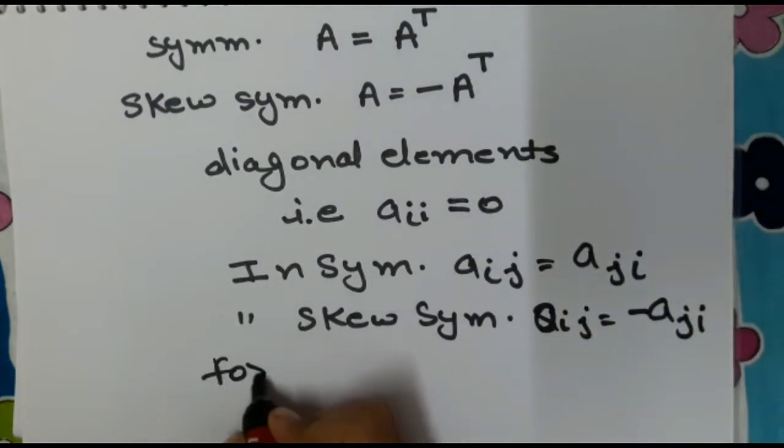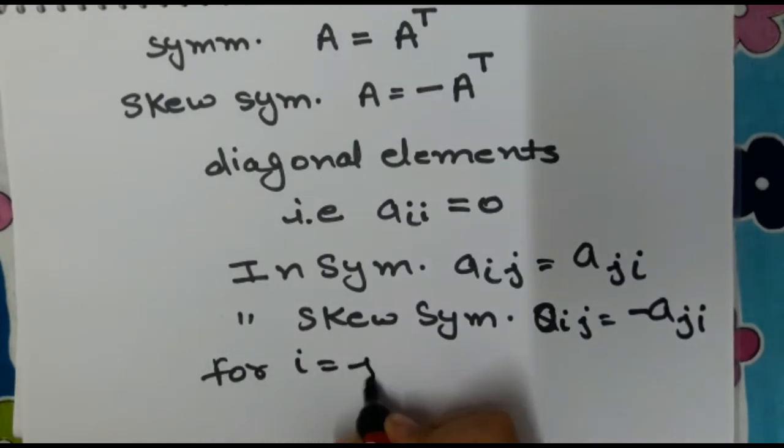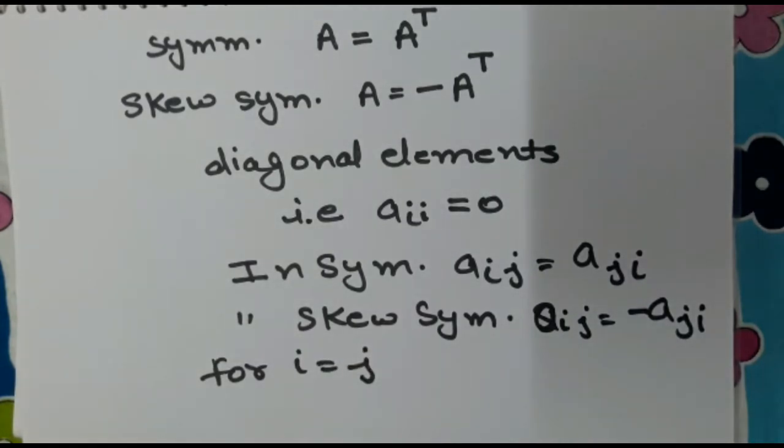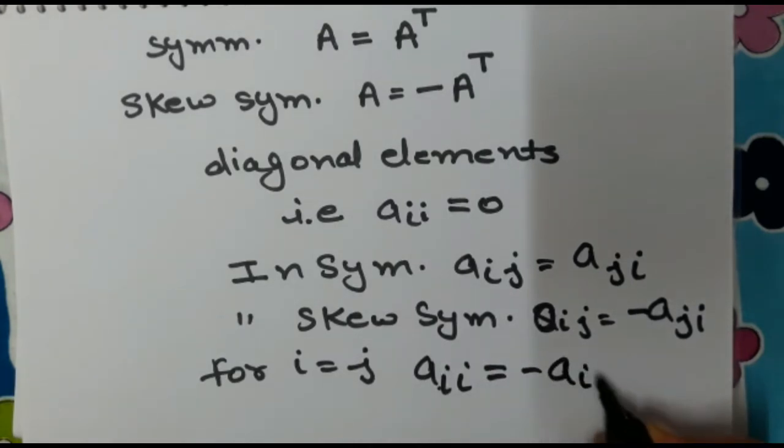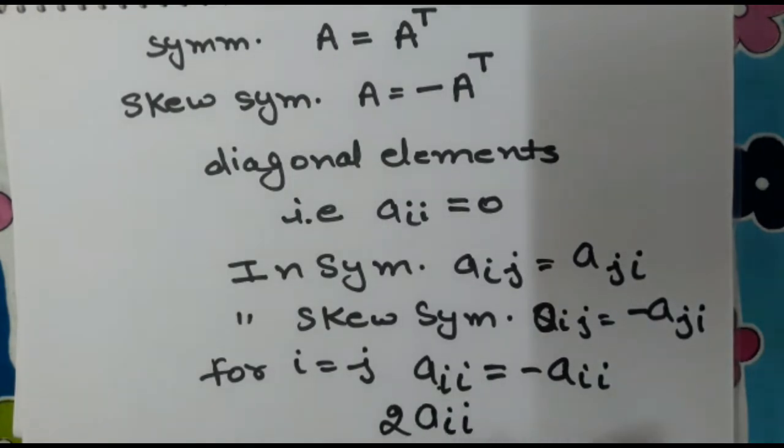For i equal to j, A_ii equal to minus of A_ii. From here we get 2A_ii equals 0, which means all the diagonal elements are 0. A_ii equals 0.